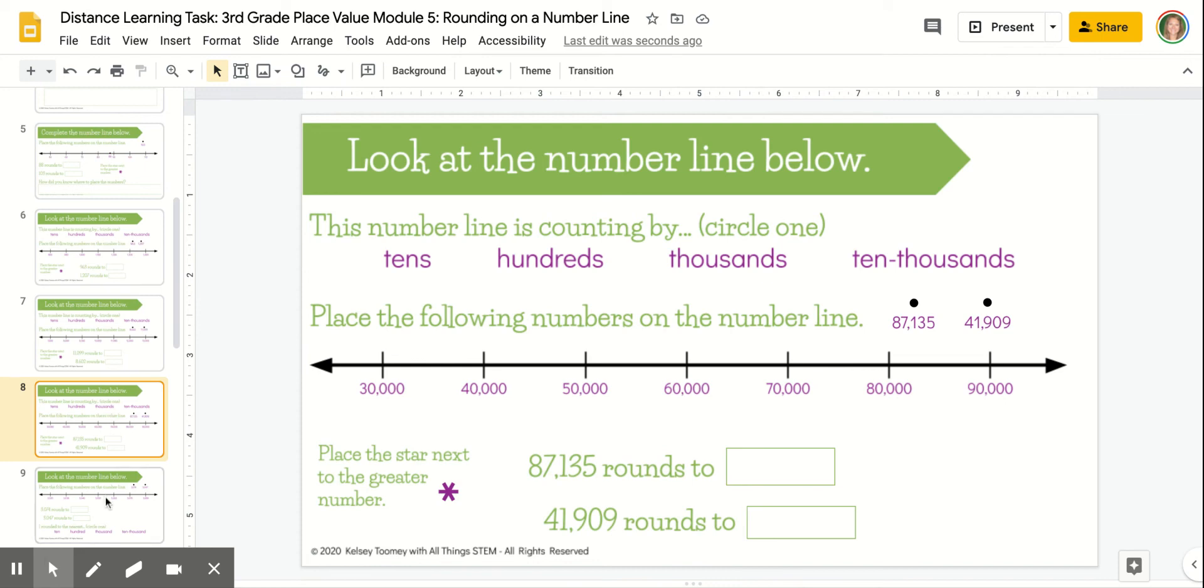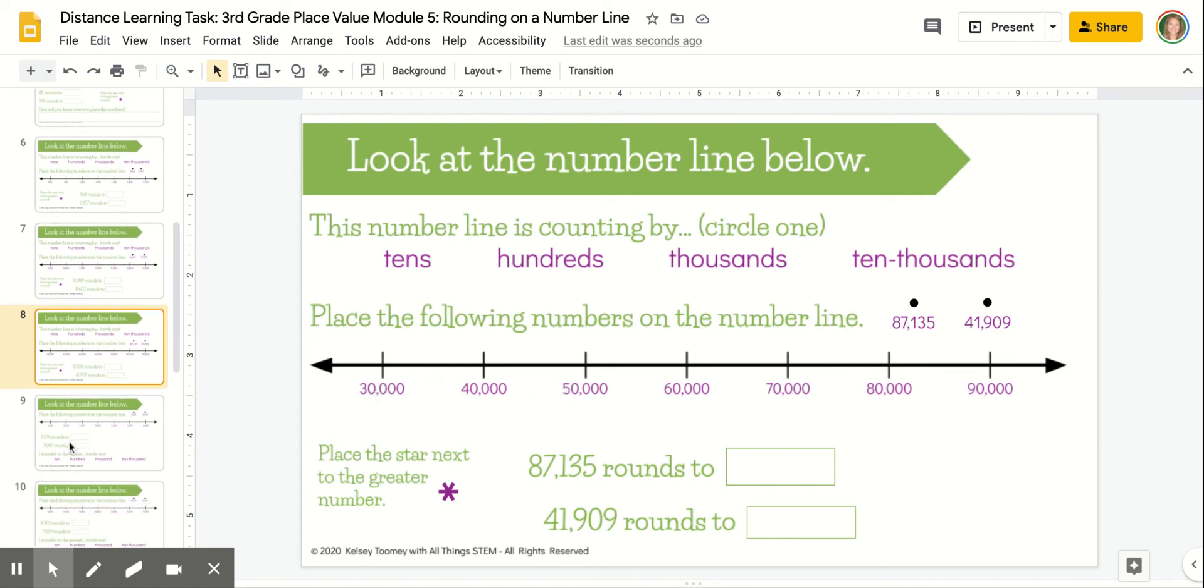Focusing on what the number line is counting by can help you know what place value you're really rounding to. You have a few different examples where you will repeat that same process, but notice we're counting by different place values each time. This number line is counting by 10,000s, for example, so pay close attention to what those number lines are counting by.